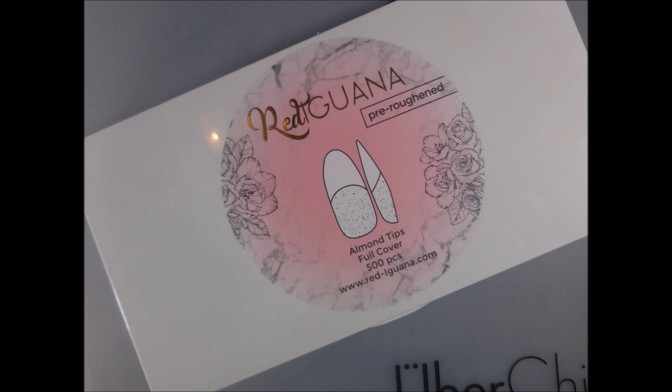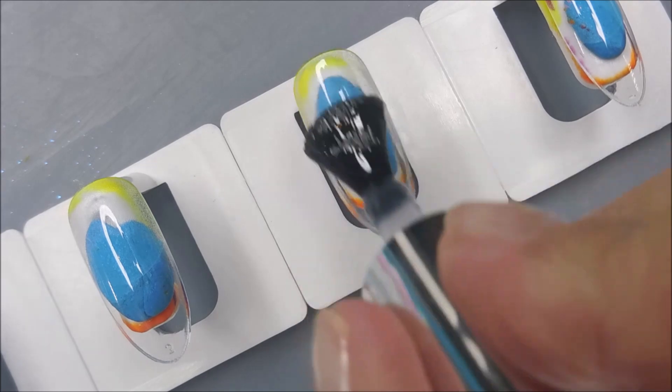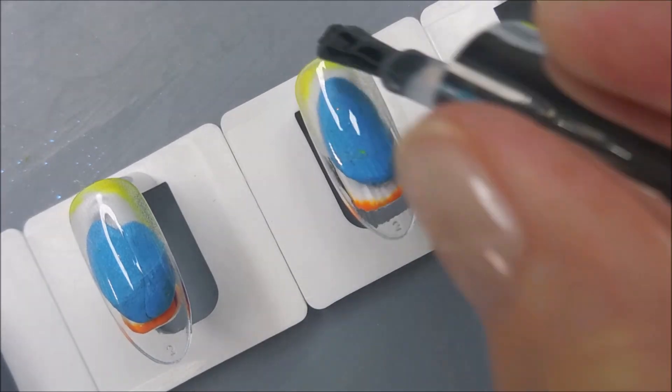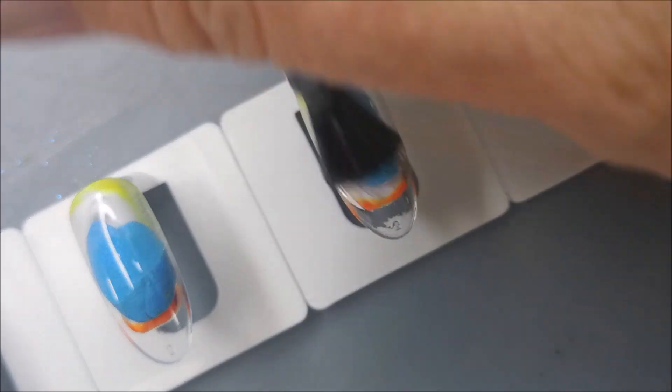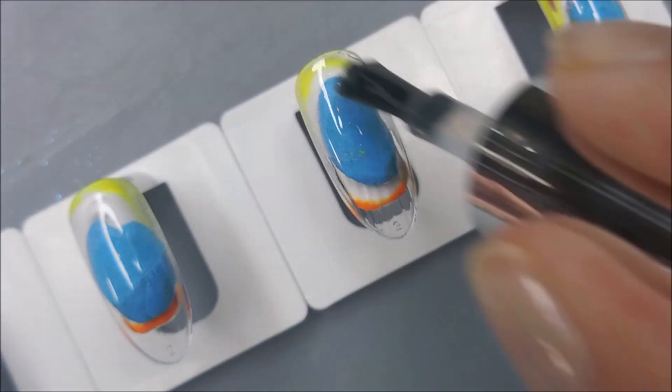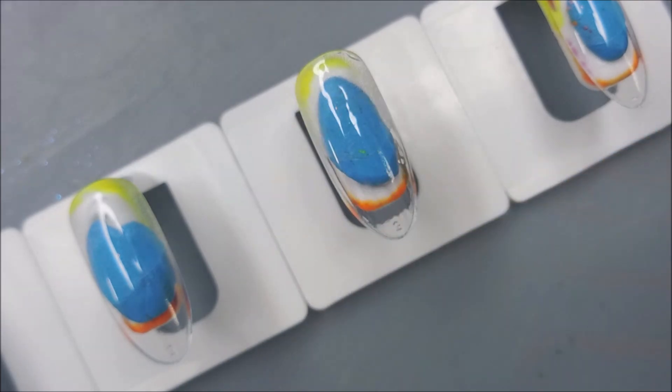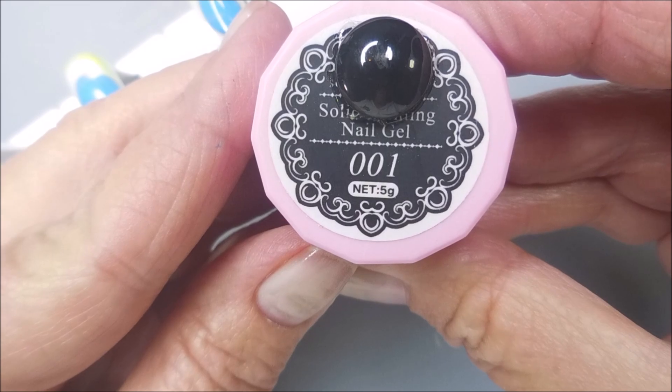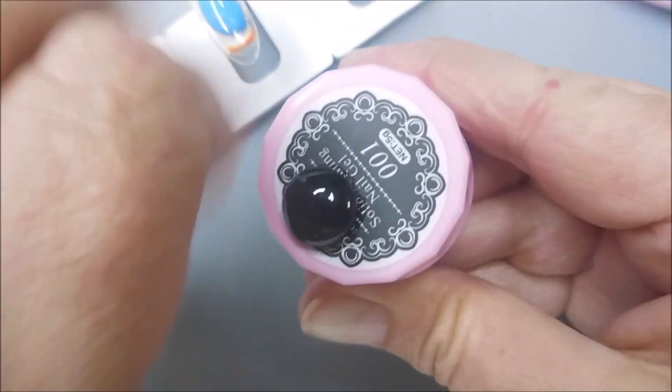So here's the box of the Red Iguana Almond Tips. I'll be using the Model 1's Base Coat on these. I will be applying these to my nails when I get done. Going back and forth over this, getting that base coat down. Get it on there! I'm going to cure it for 60 seconds.